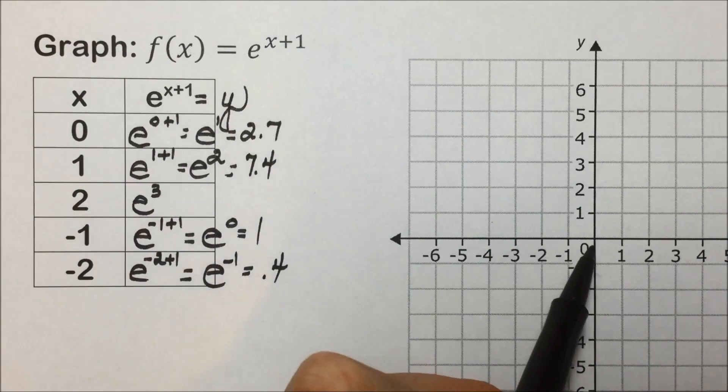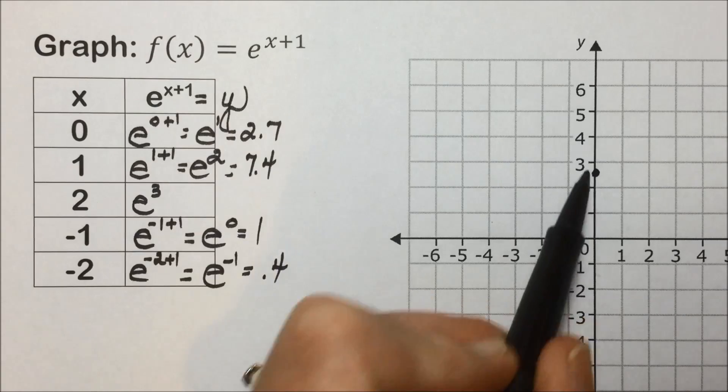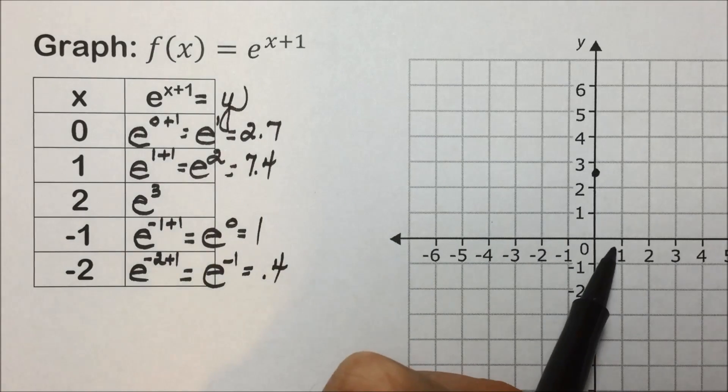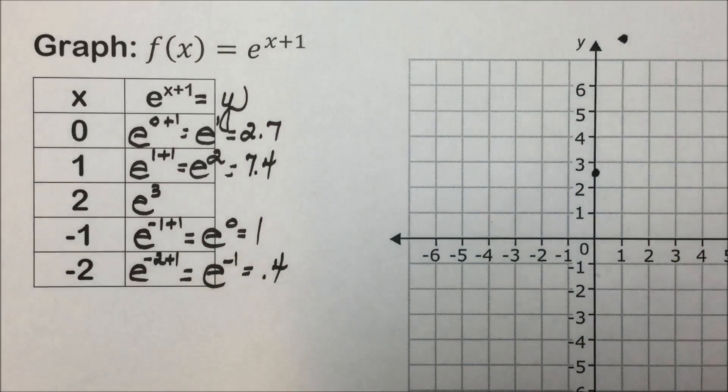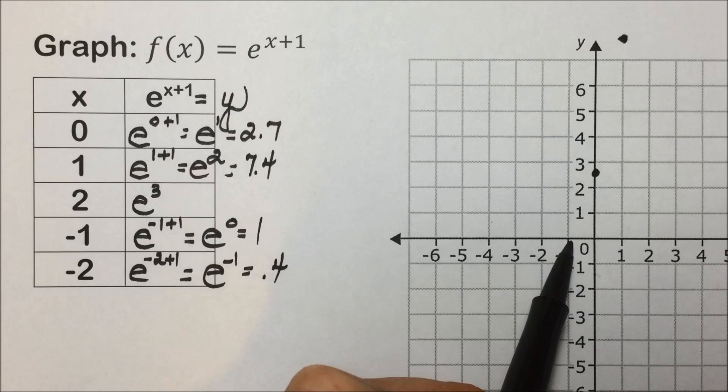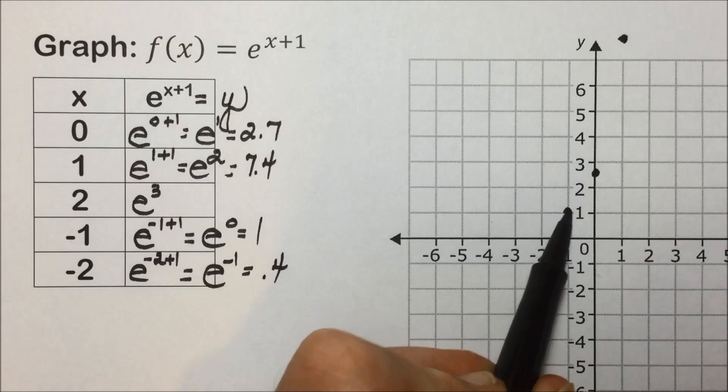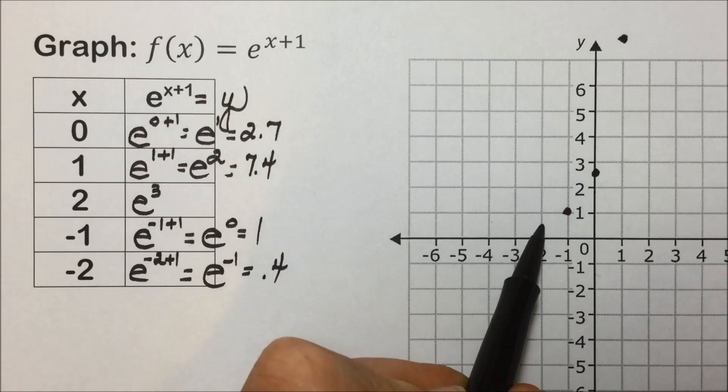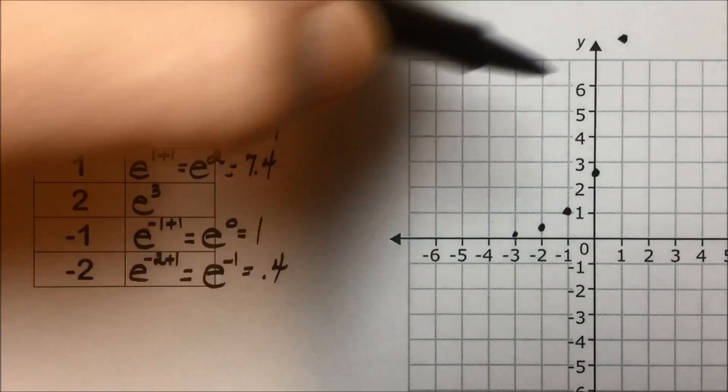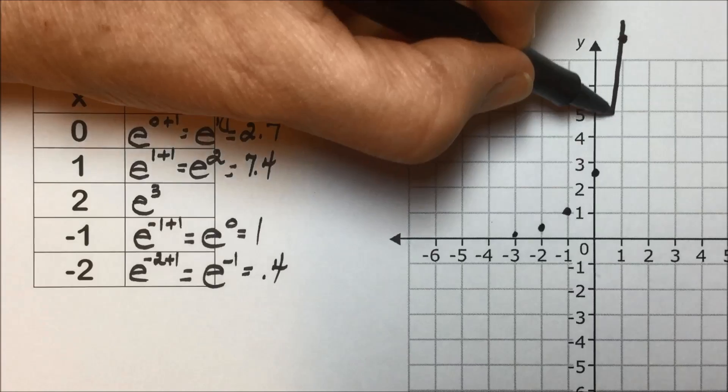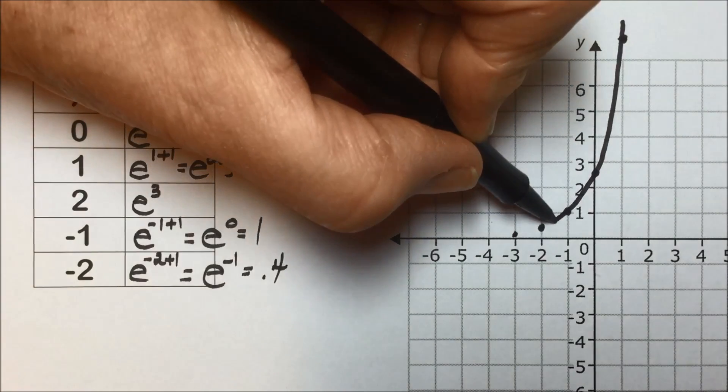The first point we have is 0, 2.7. We found 1, 7.4, so we're off our graph. 3, as I said, would be definitely increasing further. We have negative 1, 1, and we have negative 2, 0.4. If we'd plugged in negative 3, we would have had 0.1. So connecting these points that we found with a smooth curve,